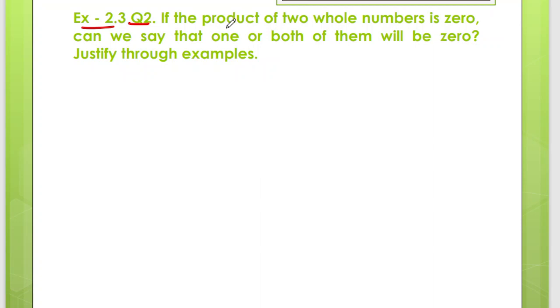Alright, so what is asked in question number 2? If the product of two whole numbers is 0, can we say that one or both of them will be 0?